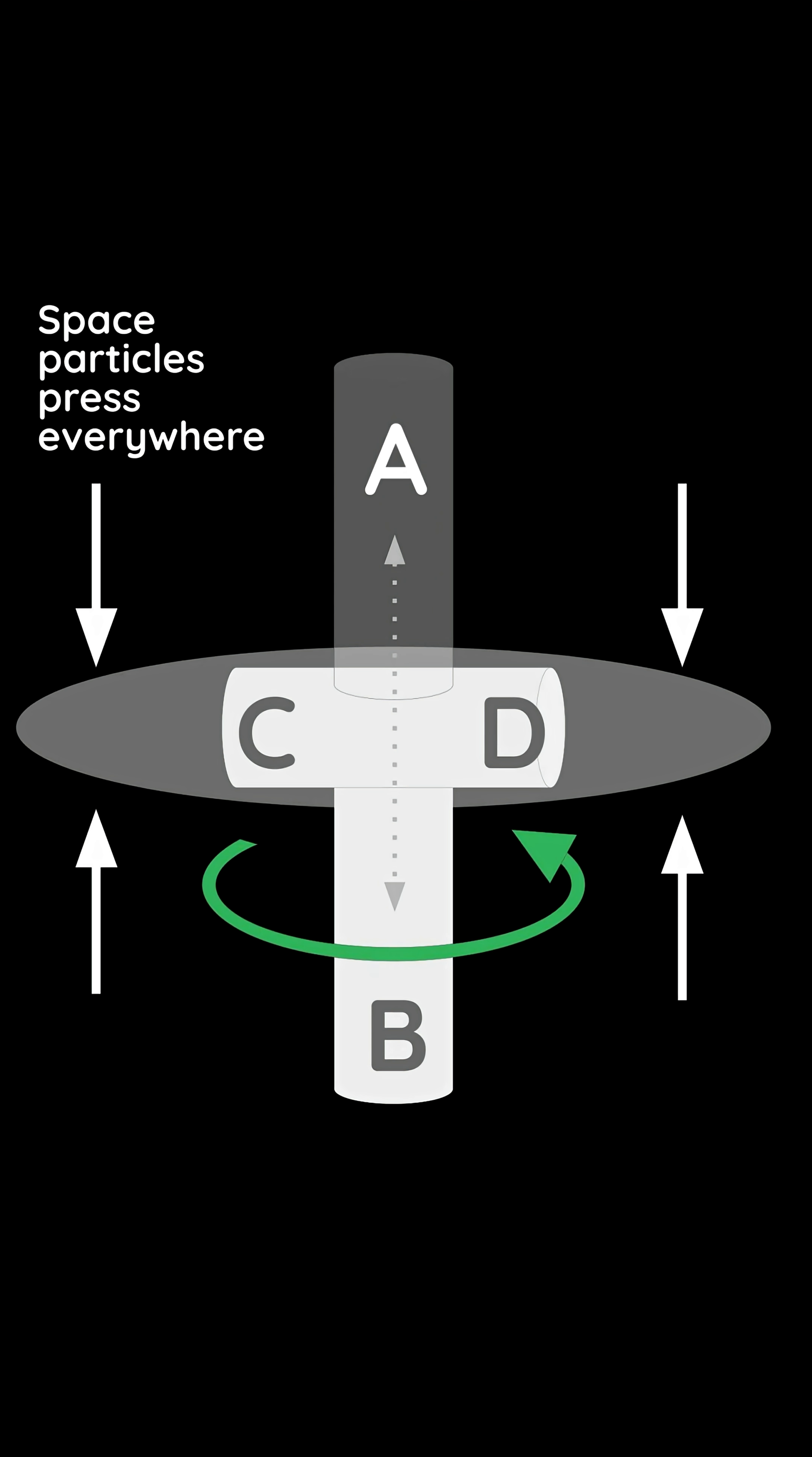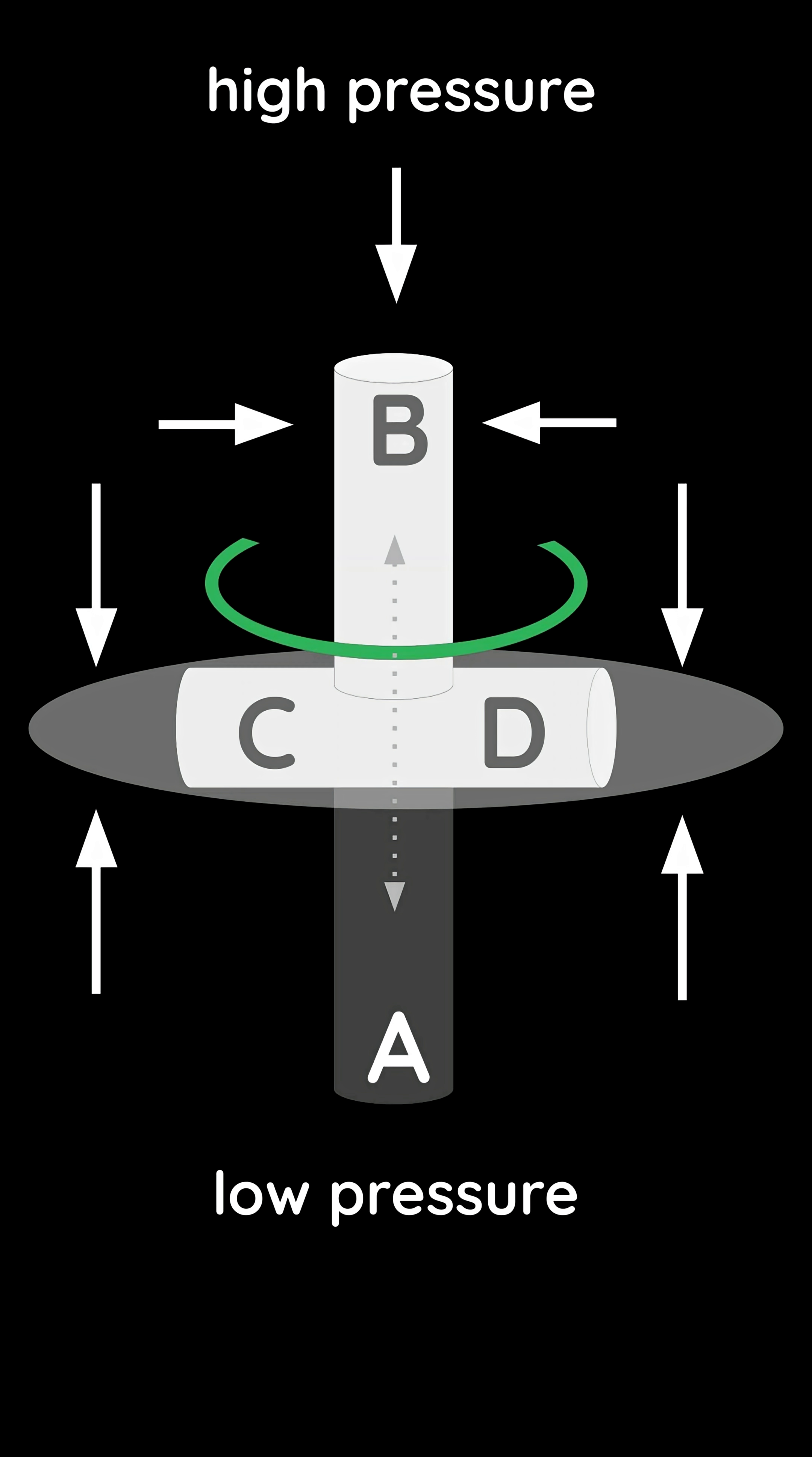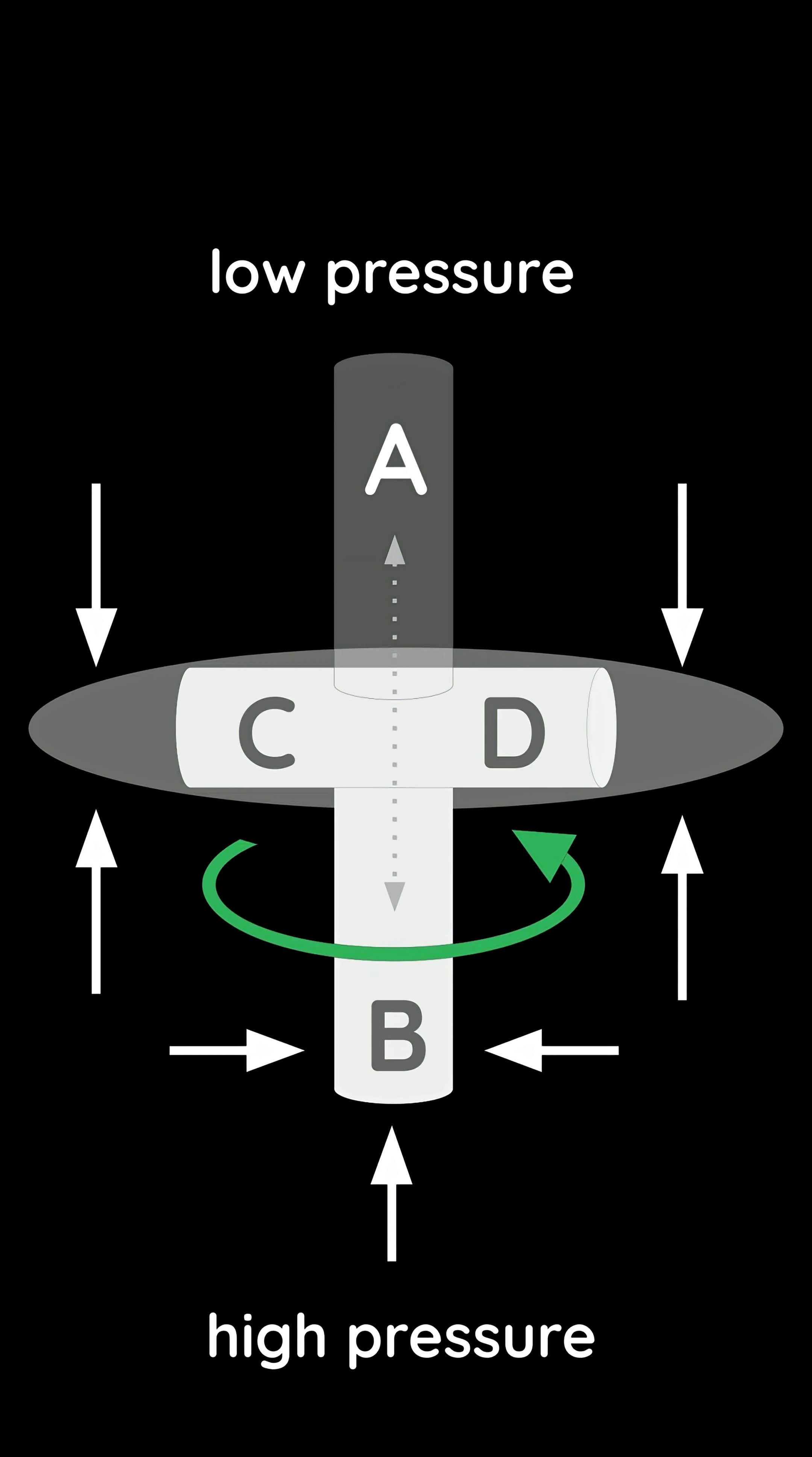Here the T-bar is missing part A that is supposed to match the force of the space particles on part B. So part A gets low space pressure and so part B flips to it to equalize it. But now it lacks part A and so it has to flip again.